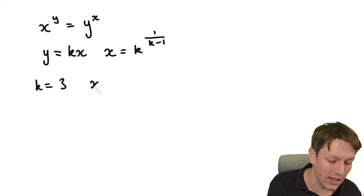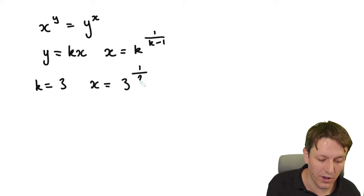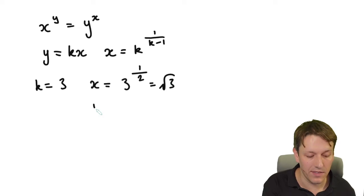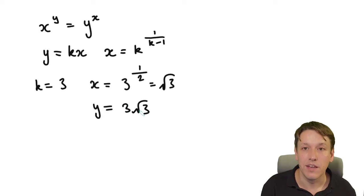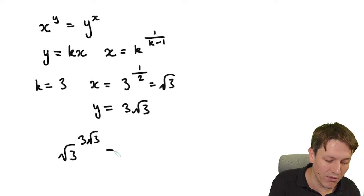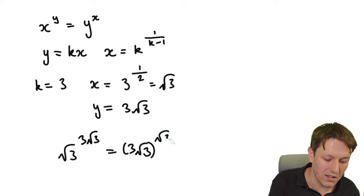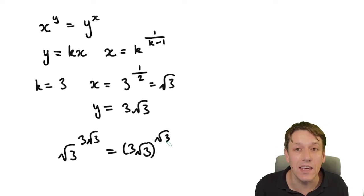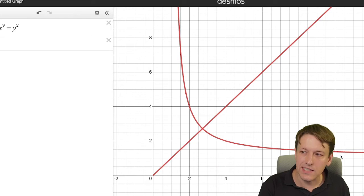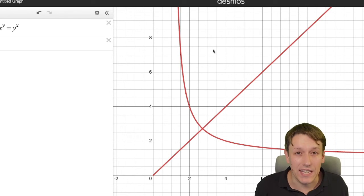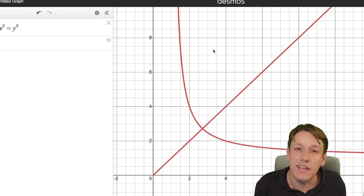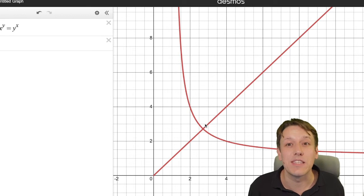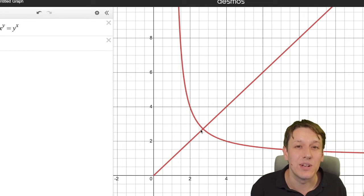Taking k equals 3 gives x equals the square root of 3 and y equals 3 root 3, so root 3 to the 3 root 3 equals 3 root 3 to the root 3. By continuing to choose values of k we find infinitely many solutions on this curve. A natural question is: can we find nicer solutions — whole numbers like (2, 4) or at least rational numbers? The answer is yes, and it leads to a remarkable result about the intersection point.